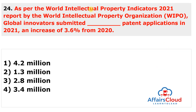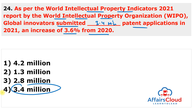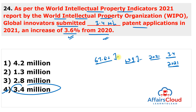Next question: According to the World Intellectual Property Indicators 2021 report released by WIPO (World Intellectual Property Organization), global innovators submitted 3.4 million patent applications in 2021, an increase of 3.6% from 2020. Nearly 67.6% of all applications worldwide were received by offices in Asia.